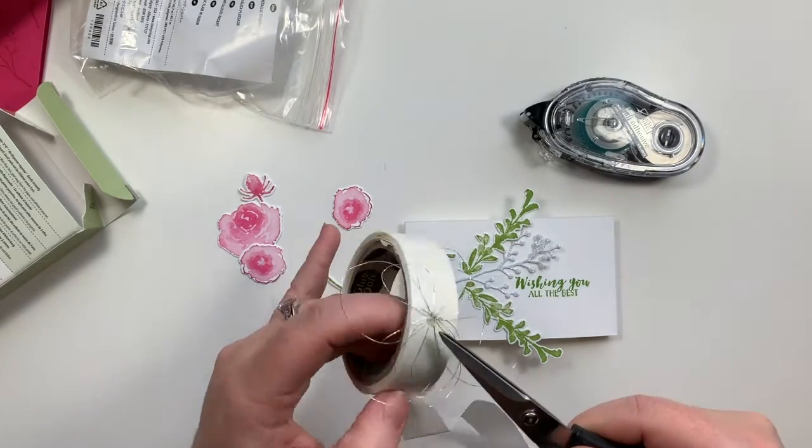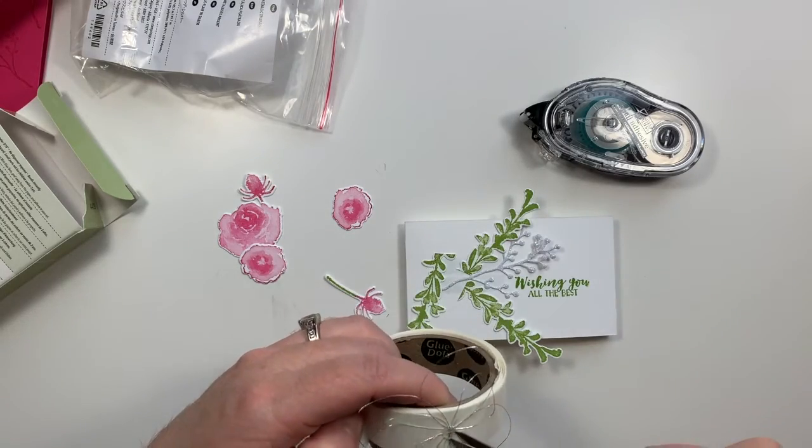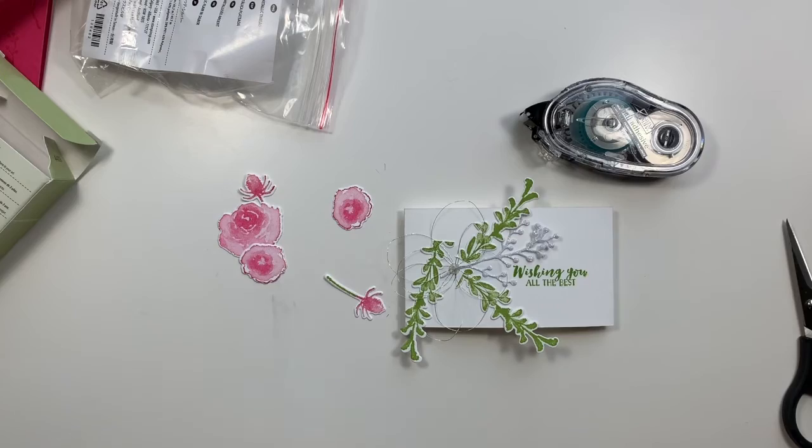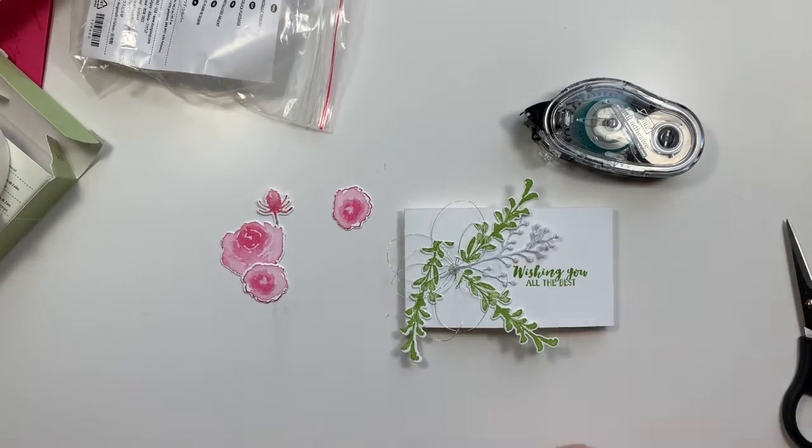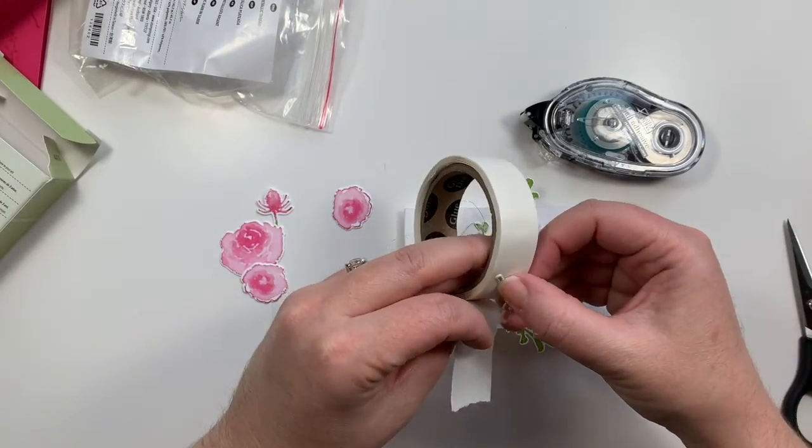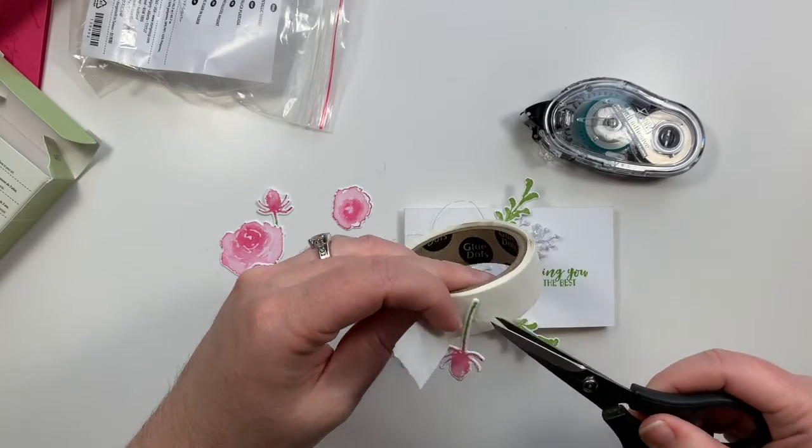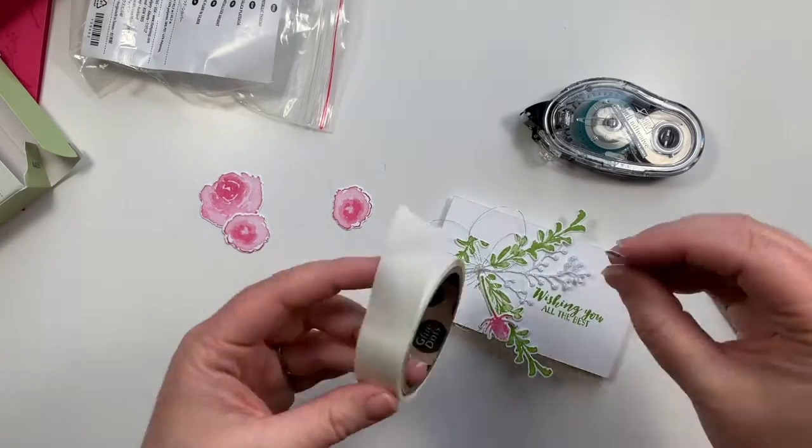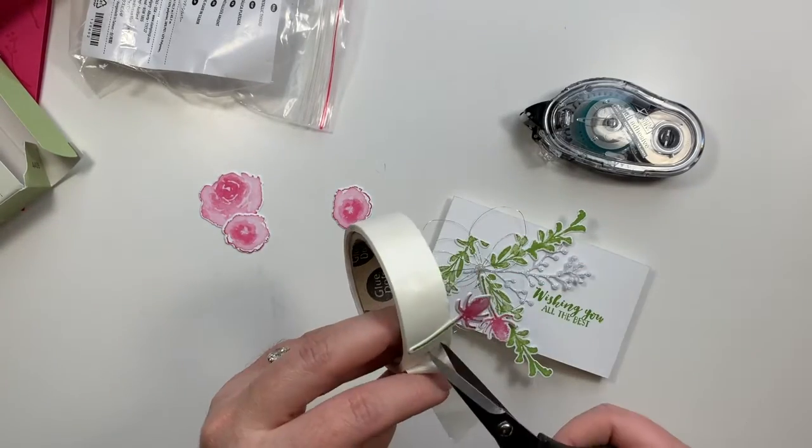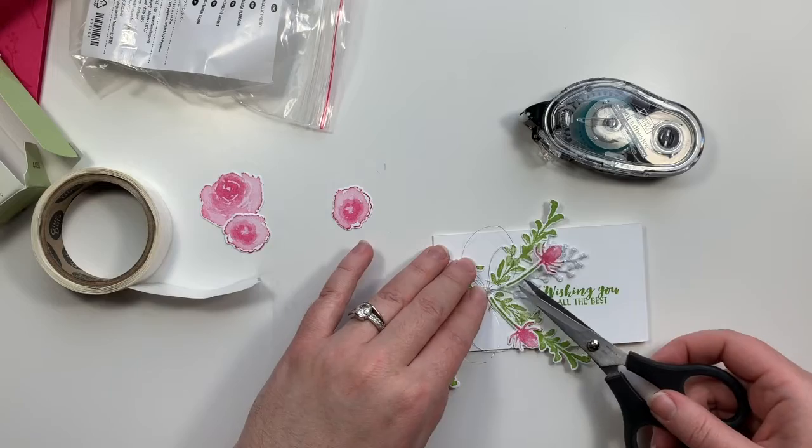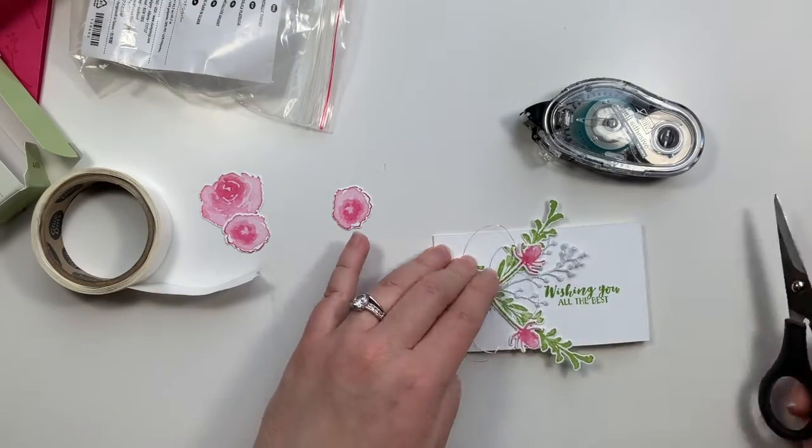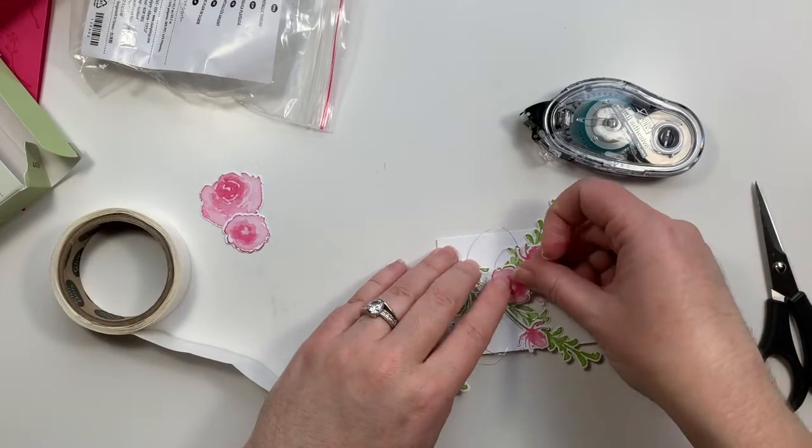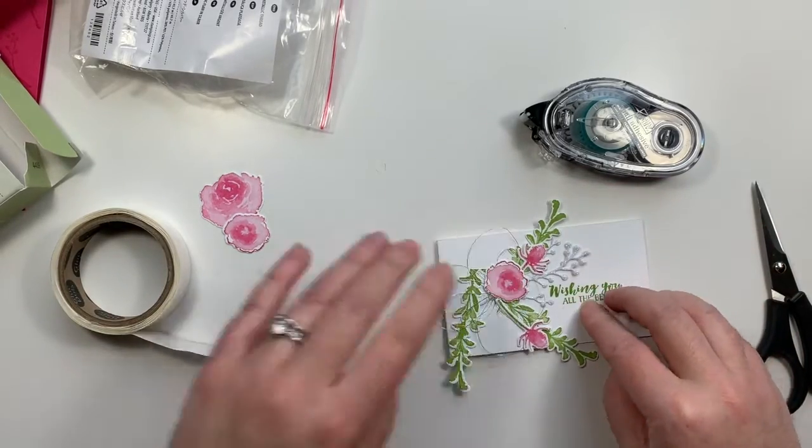I'm going to take a second glue dot and layer it right on top to make sure that I hold all those pieces together. And I'm going to pick it up and place it right onto my belly band. I'm going to adhere these with glue dots. And you're going to want to be mindful of the stem placement. You really want to make sure that you went to all that work to use two colors on these. And you want to make sure that it shows a little.